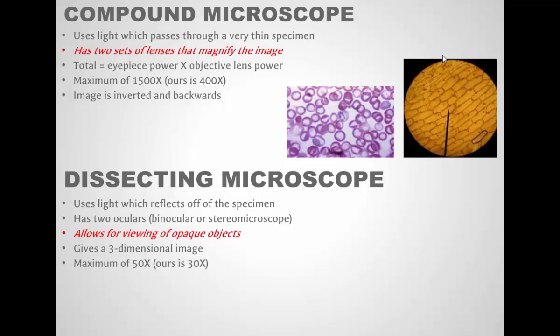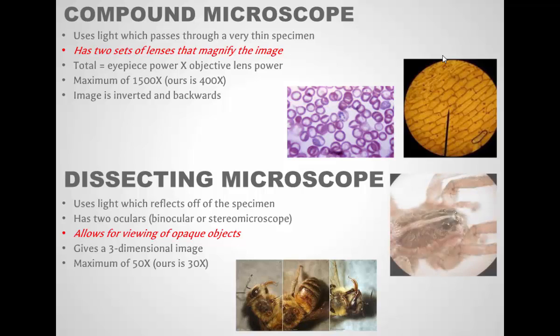Then we have the dissecting microscopes, which I know you guys have used, which use reflected light rather than transmitted light, where light bounces off the objects through the lenses. This allows you to see opaque objects, objects which are not thin enough to allow light to pass. You can see them in the dissecting microscope. It's often called a binocular microscope. Usually it has two eyepieces, two oculars, giving you a good three-dimensional view of your object. They go up to about 50 times magnification. Ours go either 20 or 30, depending on which one you pick up. They give you a three-dimensional, magnified view of the object that you're looking for.